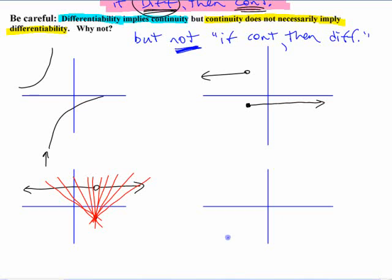Differentiable basically means if you're drawing this curve, it's a nice smooth curve. The slopes approach the same thing from either side. If you pick a point here, you look at what the slope is as you come from this side, it's that. They approach the same value as you come from this side. That's what it means to be differentiable.